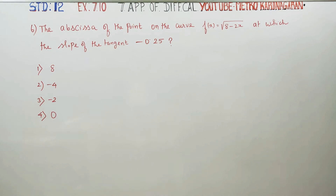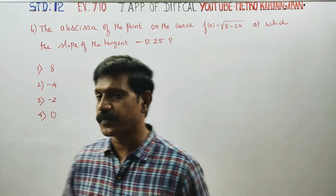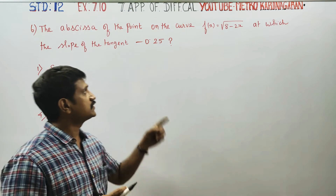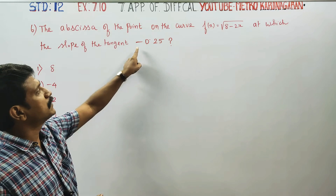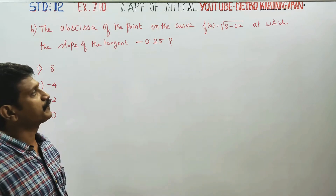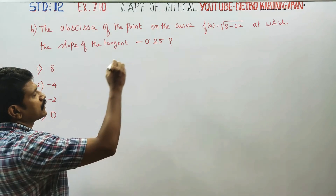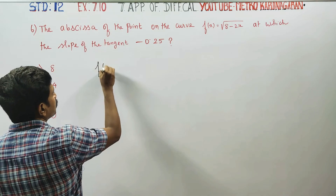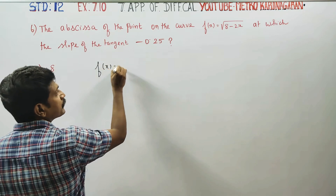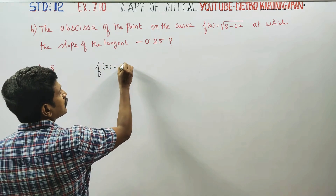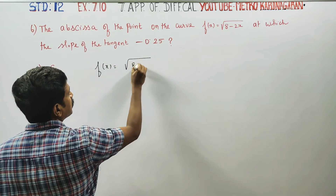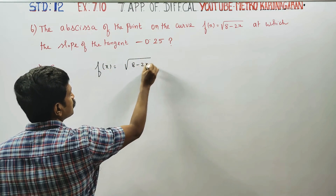Dear old standard students, in exercise number 7.10, sum number 6, find the abscissa of a point on the curve for which the slope of the tangent is minus 0.25. We have a function that is f of x equals root of 8 minus 2x.